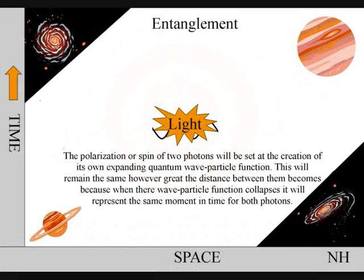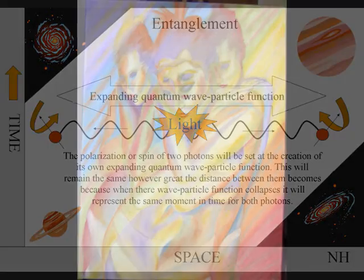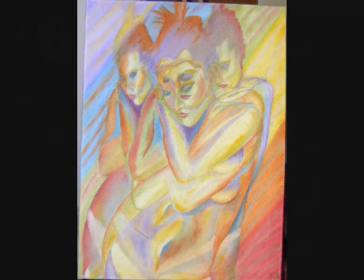We have entanglement because light moves through space but not time as a wave particle function. The polarization of two photons will be set at the creation of its own expanding quantum particle wave function. This will remain the same however great the distance between them becomes, because when their wave particle function collapses it will represent the same moment in time for both photons.